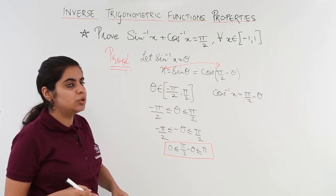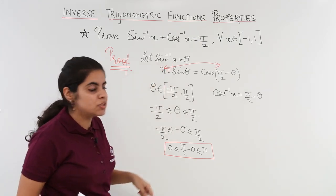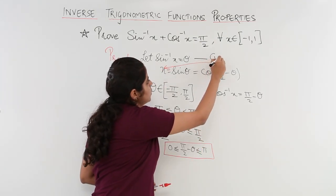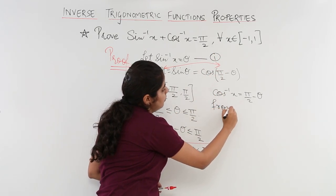What was theta equal to? Theta was sin inverse of x. You substitute the value from equation number 1. So from 1.